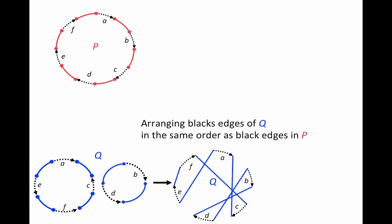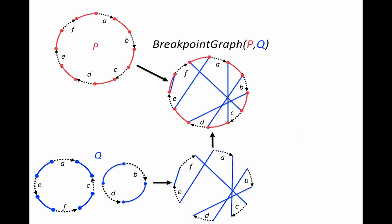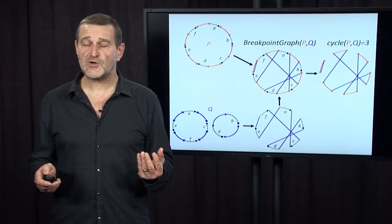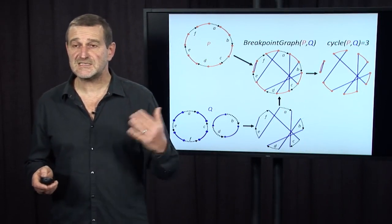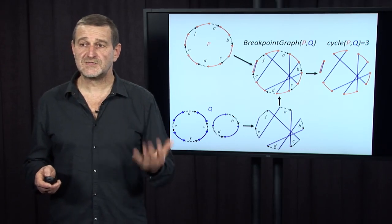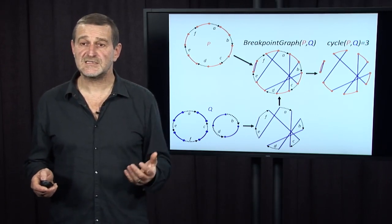As soon as we represented genome Q in this way, we can superimpose P and Q and we get the breakpoint graph. And after we remove black edges from the breakpoint graph, we see that the cycle number of P and Q is equal to three because there are three cycles in this graph.